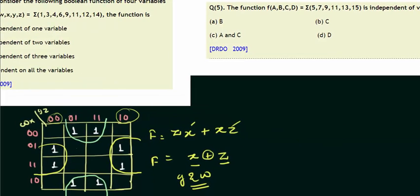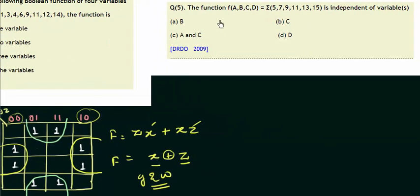The function f having the variables a, b, c, d is equal to summation 5, 7, 9, 11, 13, 15 is independent of variables. This is the same problem. There is no difference between these two problems. They are the same. You have to make a 16-cell K-map because there are four variables involved: a, b, c, d.